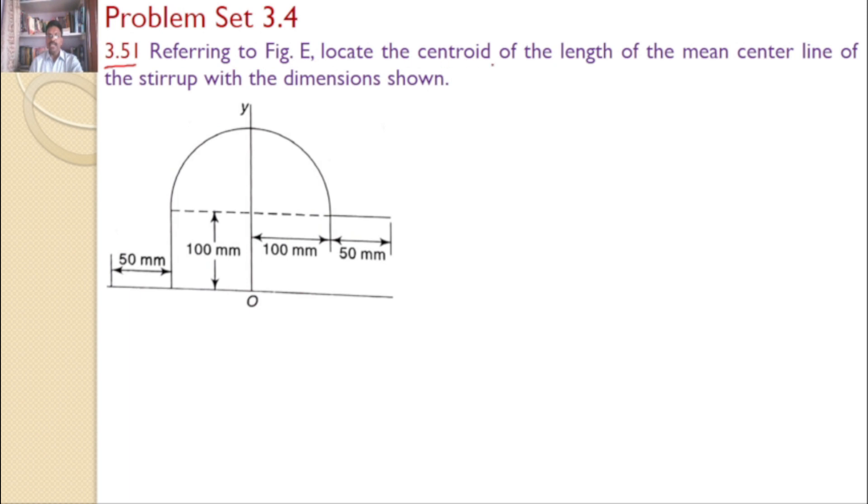Referring to the figure, locate the centroid of the length of the mean center line of the stirrup with the dimensions shown. There is a strip formed into these lines. Our interest is to find the centroid of this composite line member.